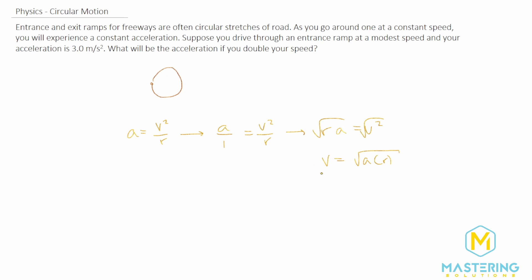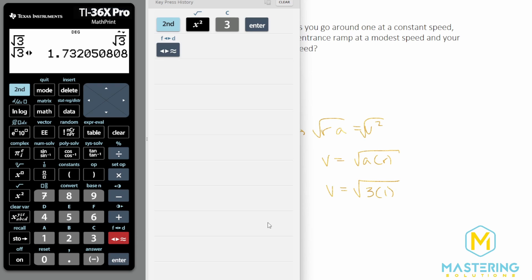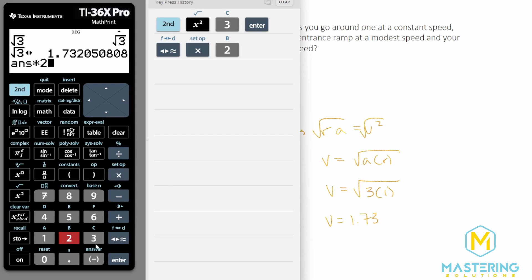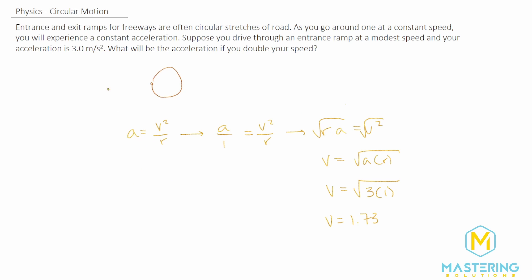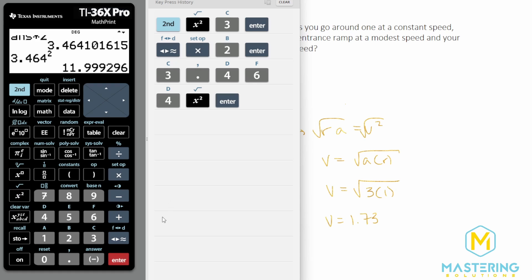We want to figure out what the speed was initially, then double it and plug it back into the equation. So v equals the square root of 3 times 1, which gives 1.73. Doubling that gives 3.464. Plugging back in, the new acceleration equals 3.464 squared divided by 1, which gives us 12.